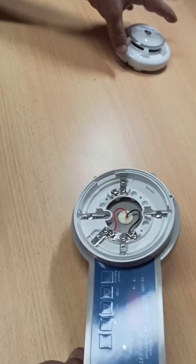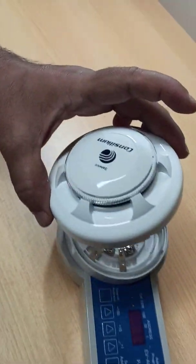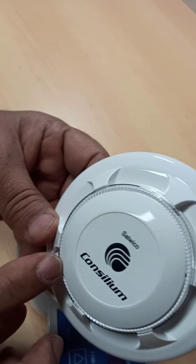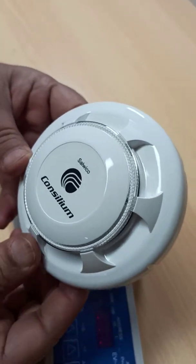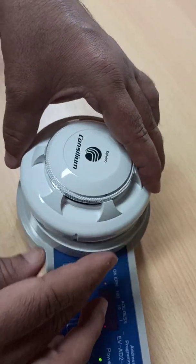Now I will do the address. This is the Salvego Consilium smoke detector. I will set the address.